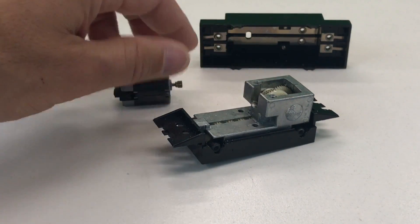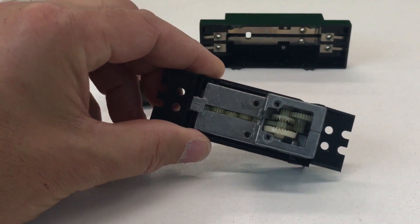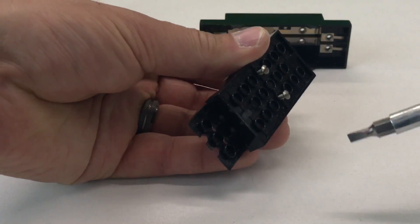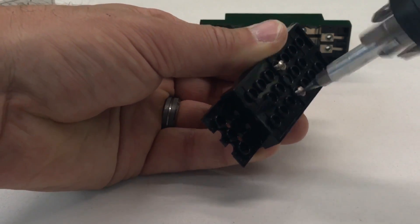So the motor just pops right out. You can see the gears there. So what we're going to do, since we didn't really need to take these screws off, we're going to put them back on.